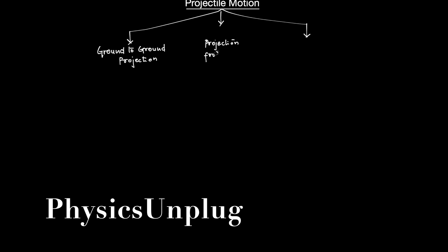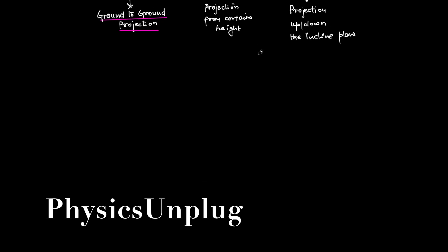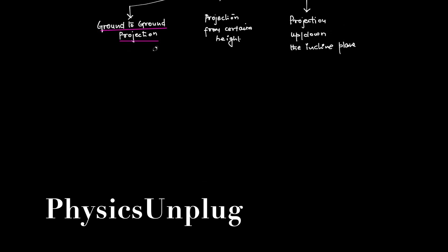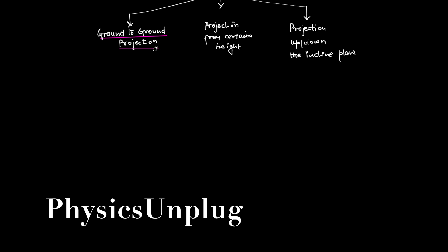and the last type is projection up or down an inclined plane. In the lecture, we are going to complete ground-to-ground projection. This is the basic one - once the basics are clear, you can understand the other parts. For ground-to-ground projection, first of all, I'd like to make everyone clear that